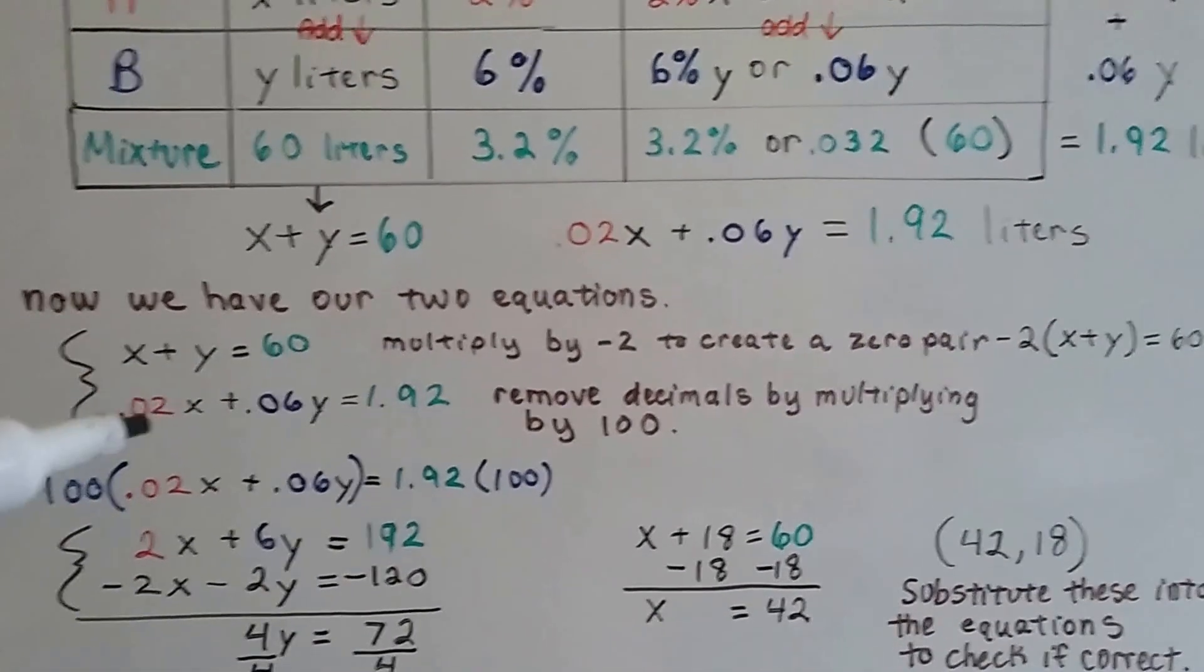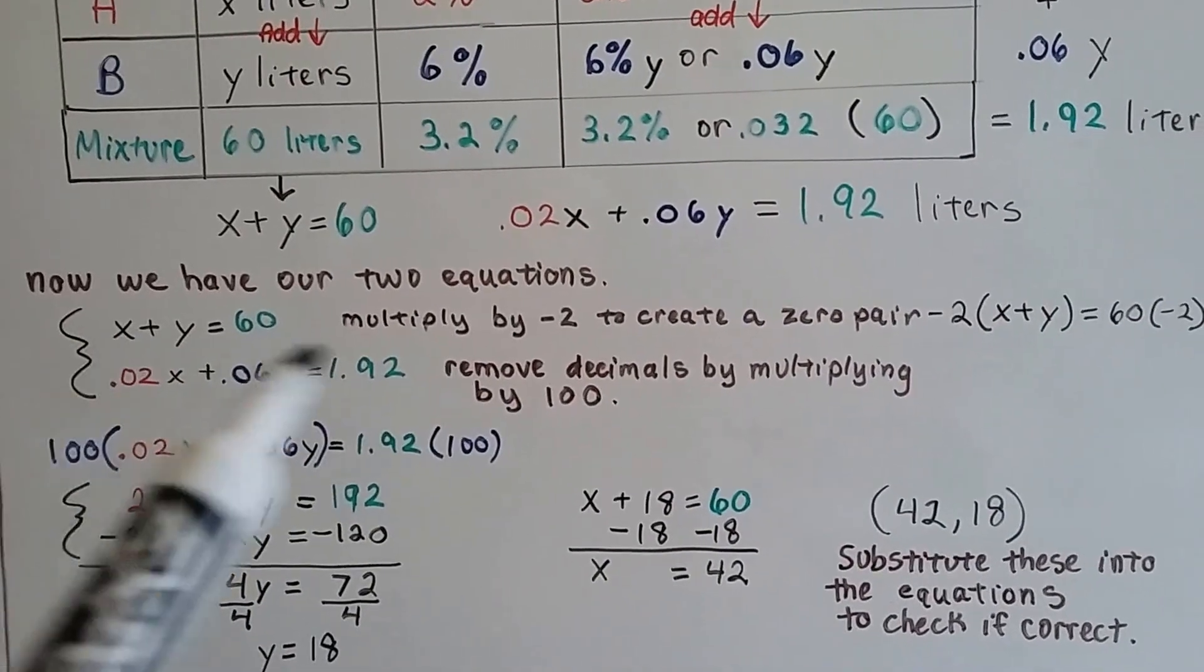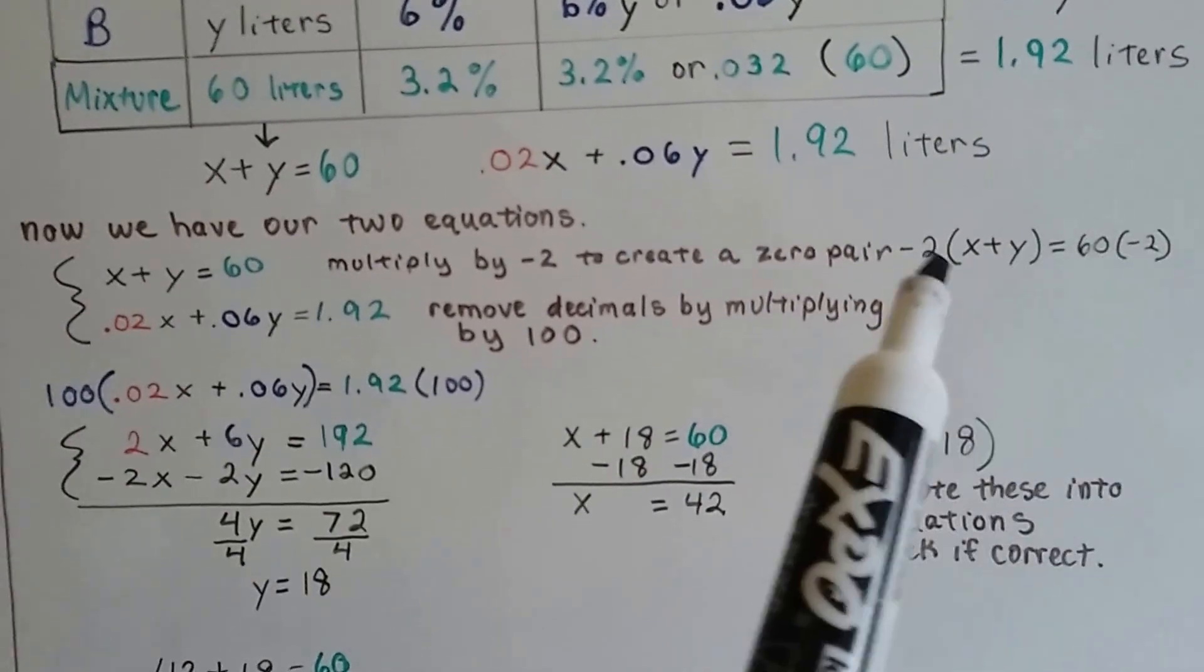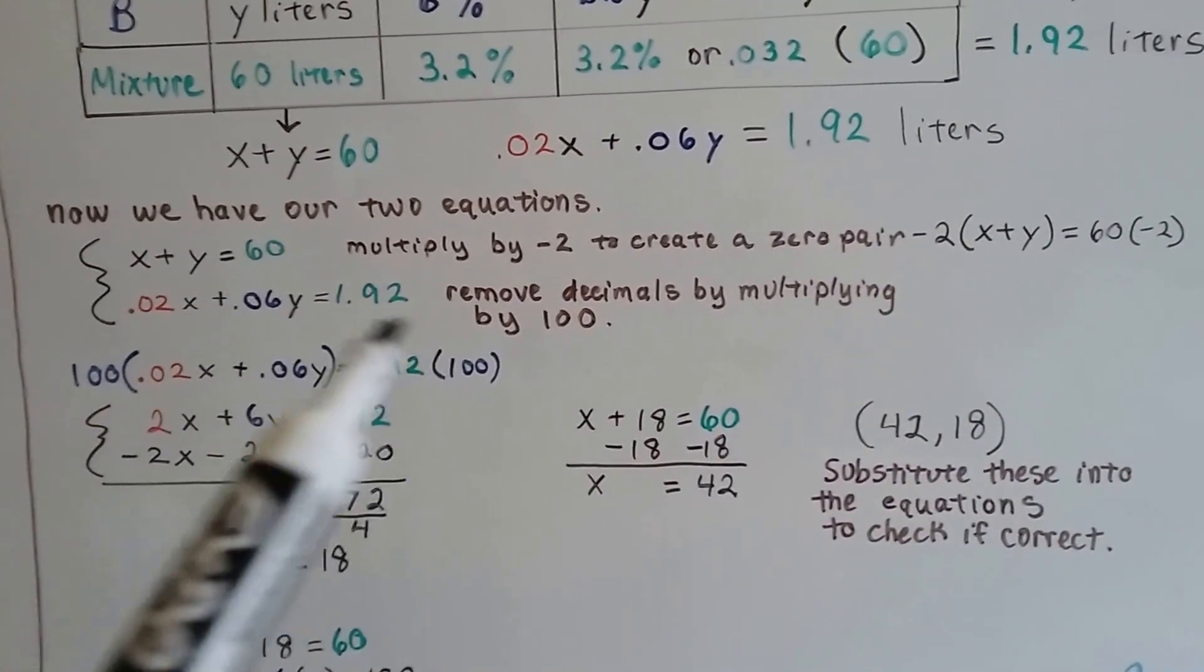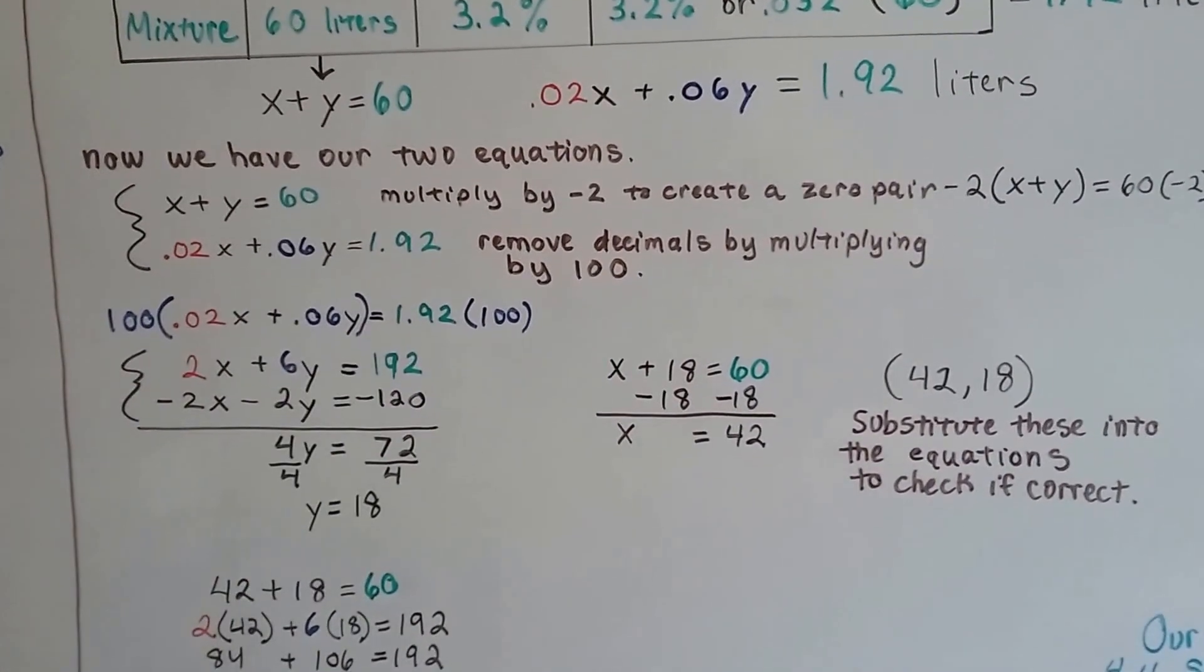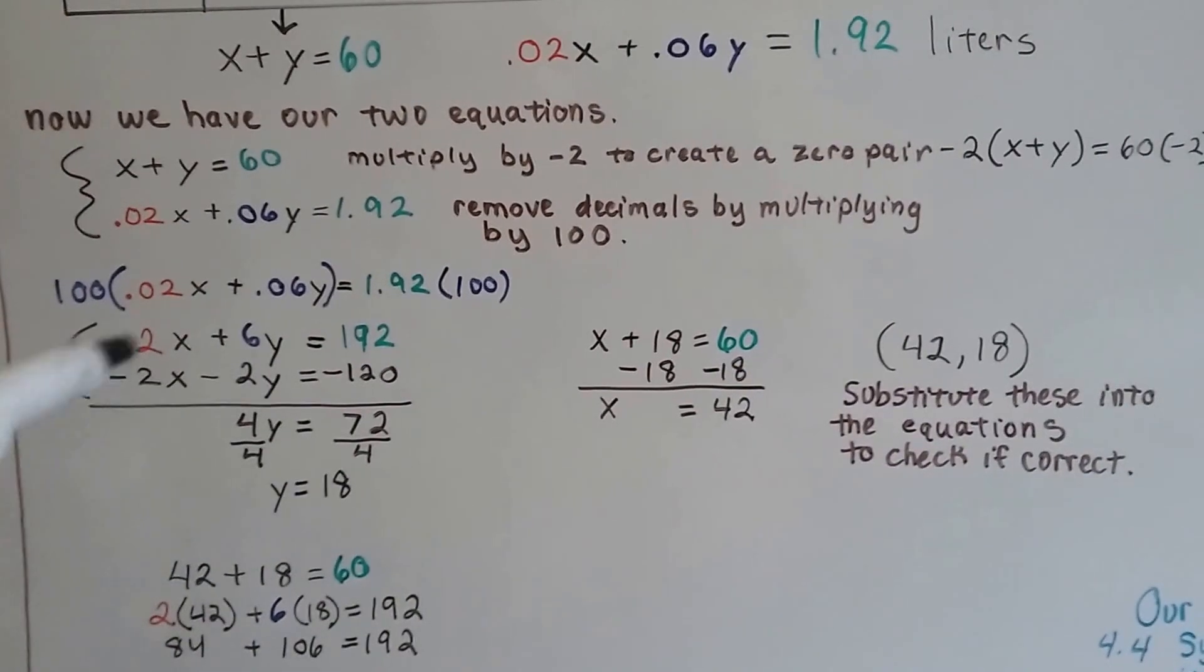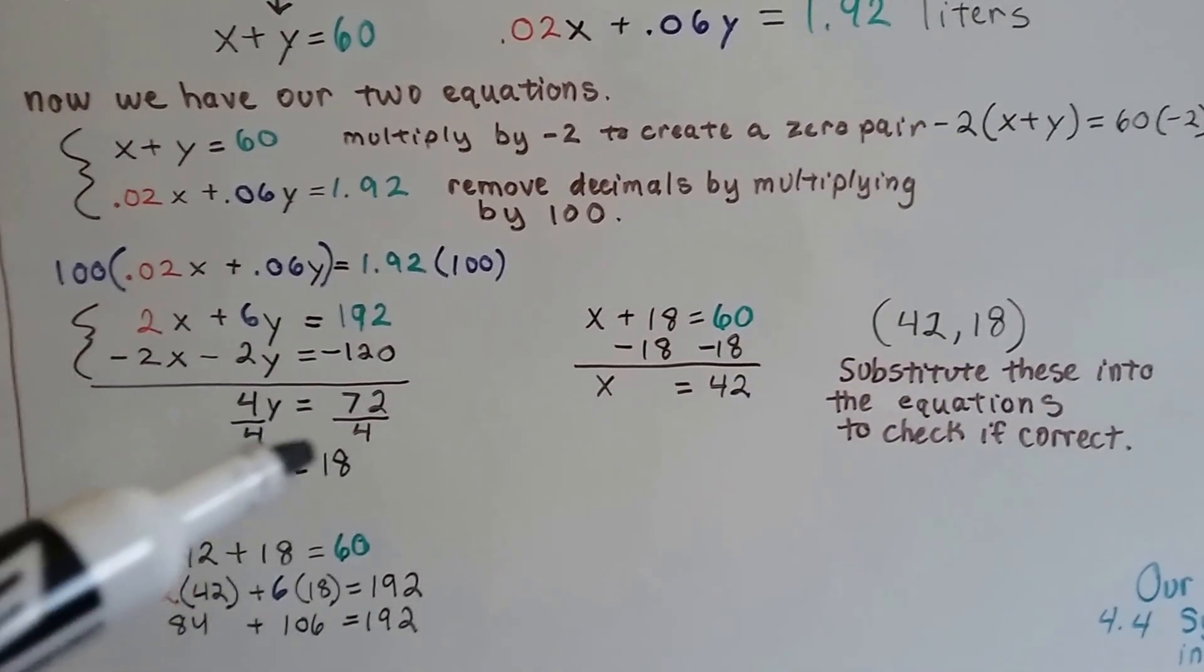Here is our system of equations. We need to get rid of the decimals and we need to create a zero pair. We can multiply this first one by a negative 2 to create a zero pair. That's going to change this equation to look like negative 2X minus 2Y equals a negative 120. Because, we multiply both parts of the equation by that negative 2. We need to remove the decimals here so we can multiply it by 100 by a power of 10. And, this ends up becoming 2X plus 6Y equals 192. See? We multiplied each term by that 100. Now, here is our new system of equations. And, we created a zero pair with that positive 2X and that negative 2X. So, now that's gone. And, 6Y minus 2Y is a 4Y. 192 minus 120 is 72. We divide each side by the coefficient 4 and we get Y is equal to 18.